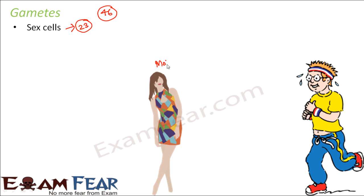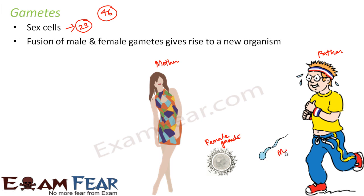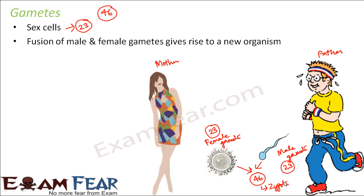The mother will contribute a female sex cell — the female gamete. The father contributes the male gamete. The female gamete has 23 chromosomes, and the male gamete also has 23 chromosomes. When both of these fuse together they form a total of 46 chromosomes — this forms the zygote. Inside the zygote or inside the new organism, it will have 46 chromosomes, but half of them have been received from the mother and half from the father. So it will have traits from both of them. Fusion of male and female gametes gives rise to a new organism.